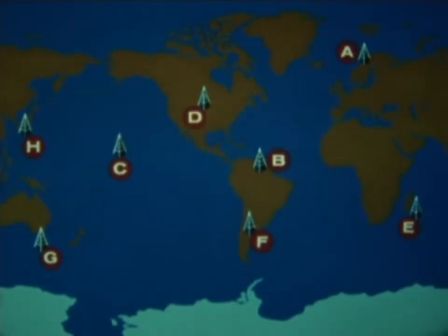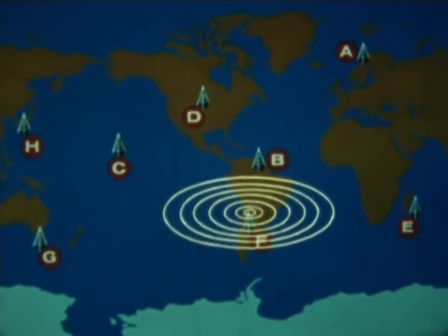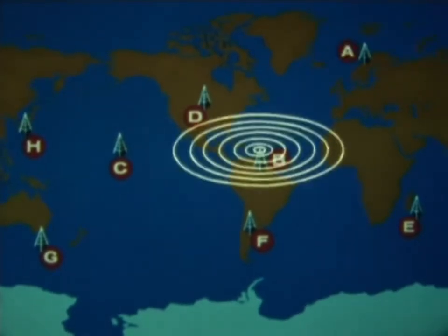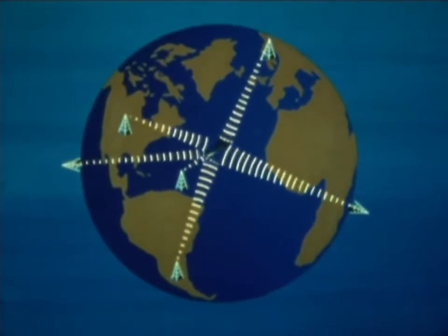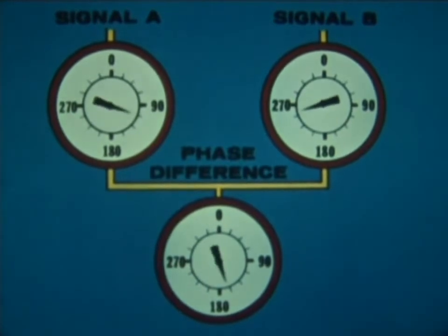But no matter what method of identification is used, the important point to remember at this stage is that the transmitters are sending out signals in a time-shared sequence, and that every omega receiver is picking up signals from a number of transmitters. These receivers are not only receiving the signals, but they're also comparing them to determine the phase difference between them.